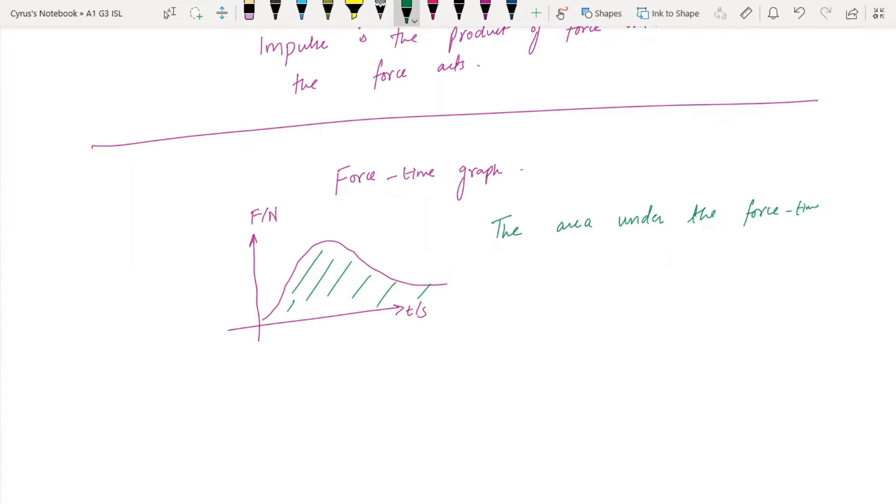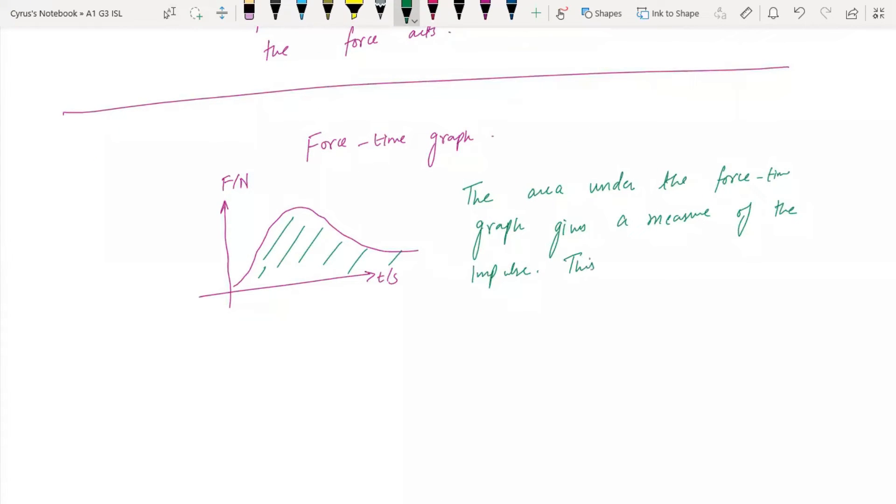The force-time graph is going to give you the impulse. So the area under the force-time graph gives a measure of the impulse, and this area under the force-time graph is also equal to the change in momentum.